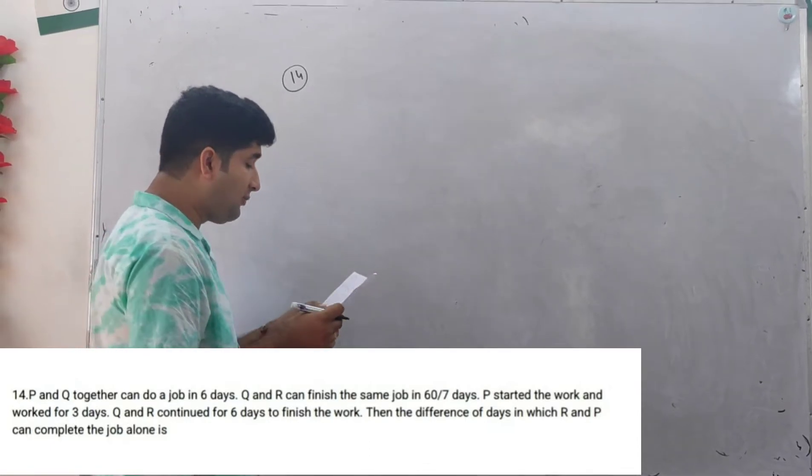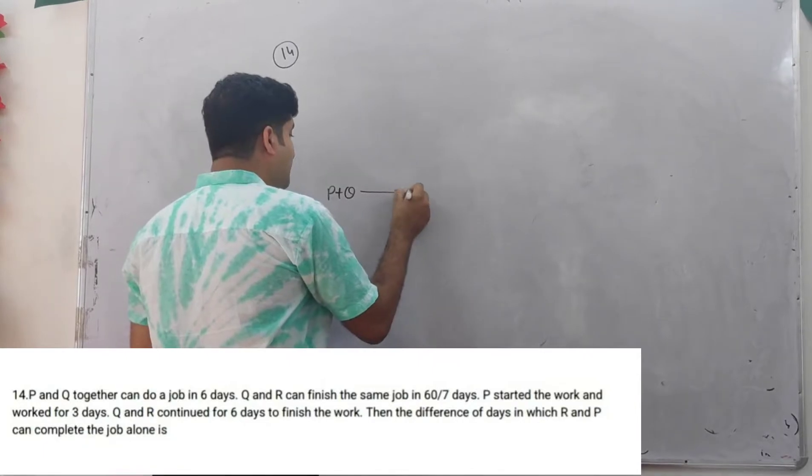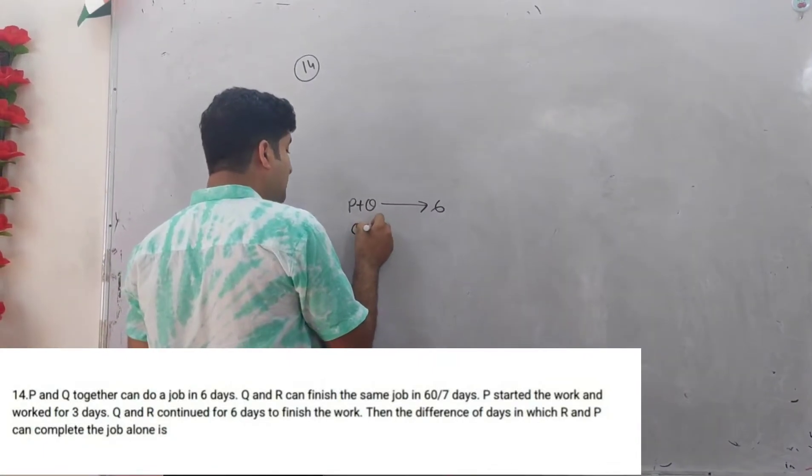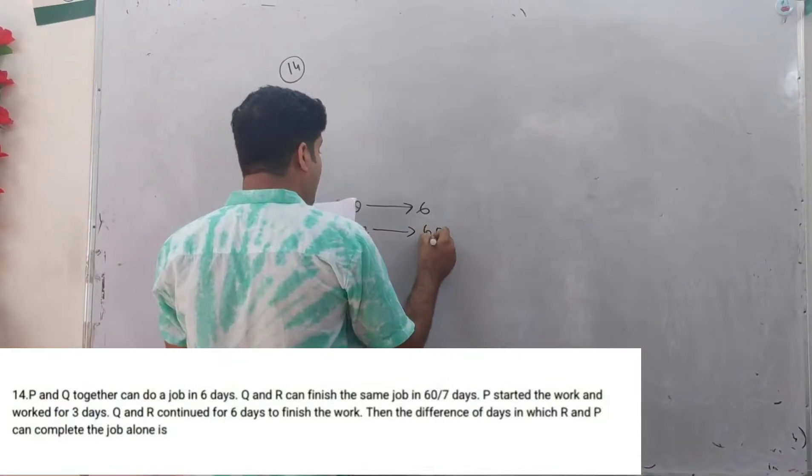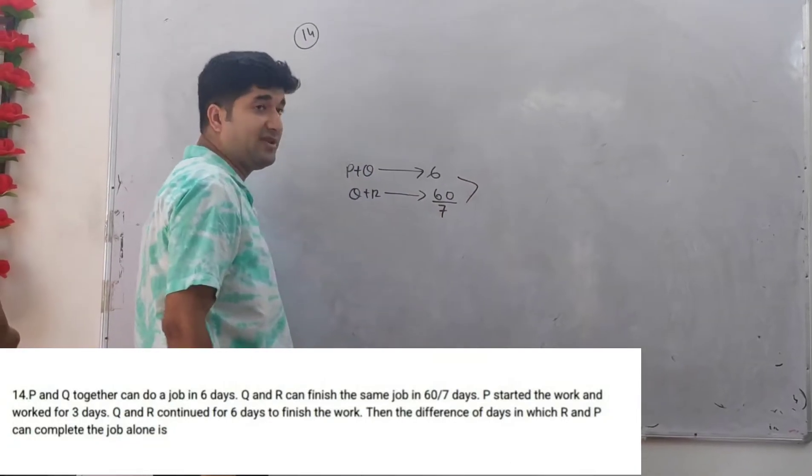P and Q together can do a job in 6 days. Q and R can finish the job in, Q plus R can finish the job in 60 over 7 days.